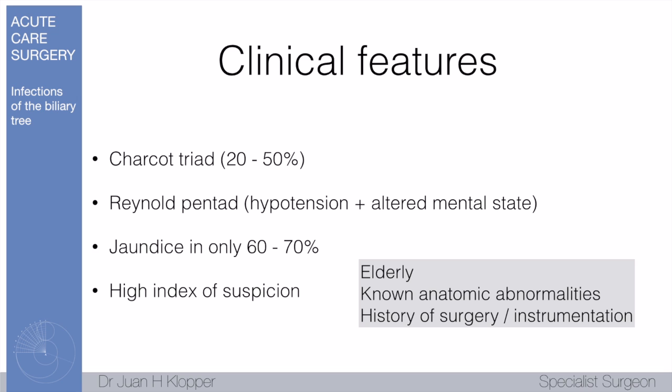Jaundice is also not universal — seen in 60 to 70% of cases. Don't be fooled that if there's no jaundice this cannot be cholangitis; it is still possible to be cholangitic without jaundice. Have a high index of suspicion especially in the elderly — they're not going to have all the symptoms and signs. Those with known anatomic abnormalities, prior instrumentation, or prior biliary injury who present with pain and fever with or without jaundice — always maintain a high index of suspicion for cholangitis and institute antibacterial therapy.